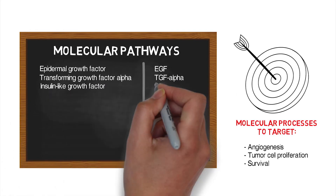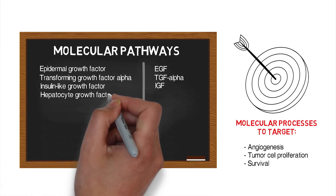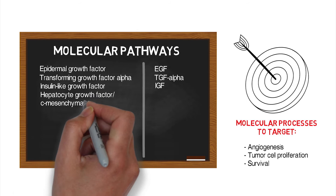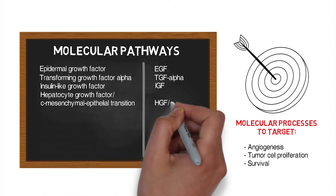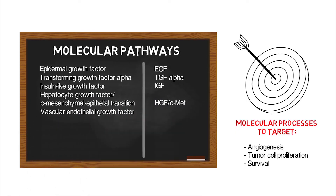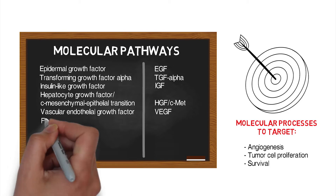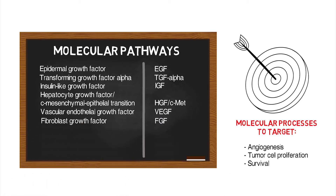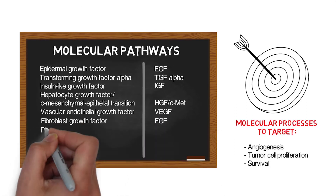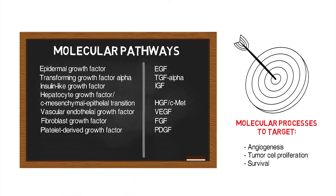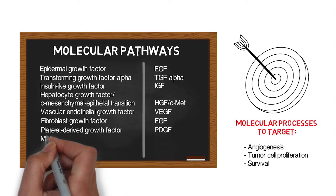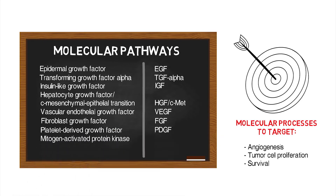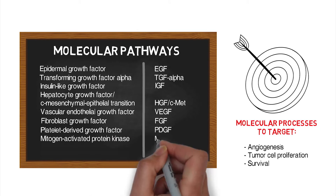Additional pathways include hepatocyte growth factor and its receptor C-MET, the vascular endothelial growth factor and its receptor, the VEGF receptor, fibroblast growth factor and its receptors, as well as the platelet-derived growth factor, and the intracellular mediator of signal transduction, the mitogen-activated protein kinase, or MAP kinase.